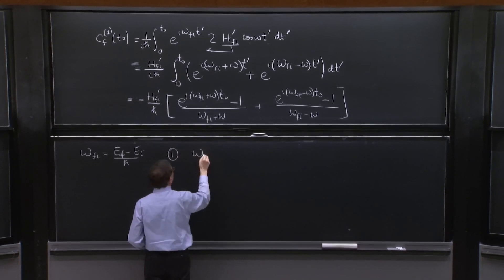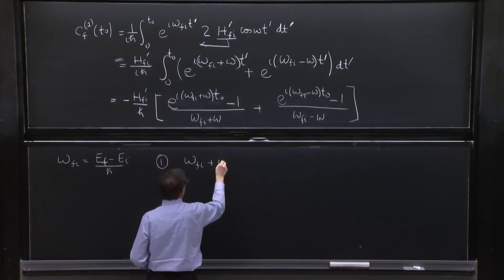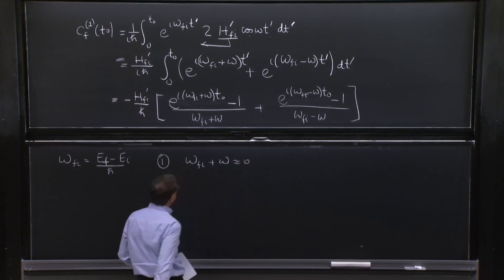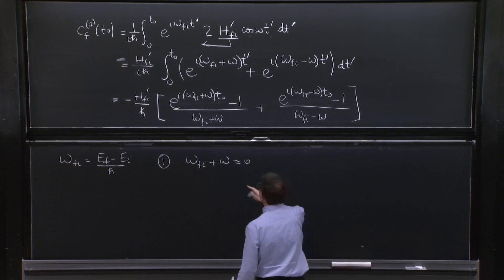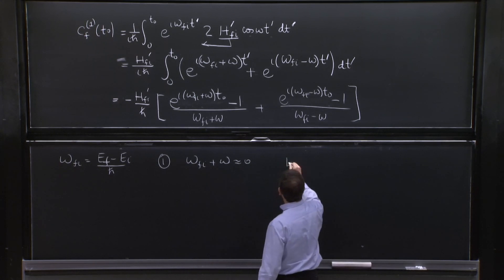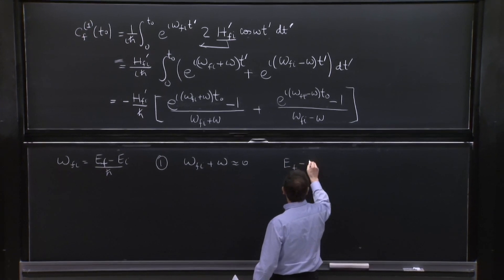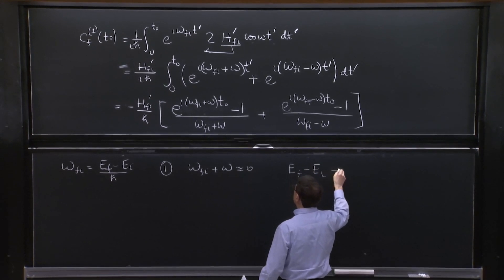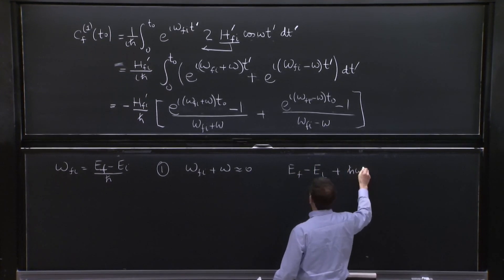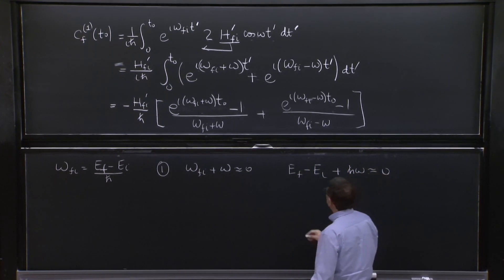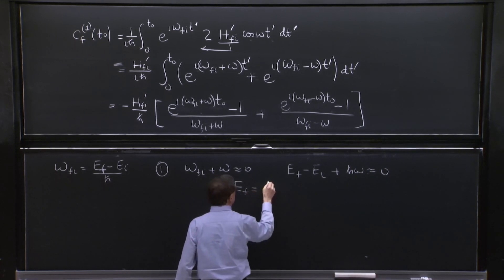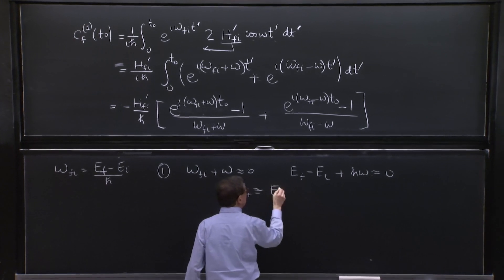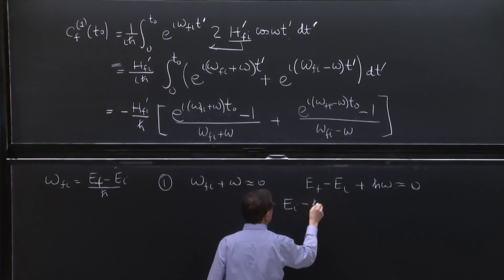When omega fi plus omega is nearly 0. In this case, what's happening? You have EF minus EI plus h bar omega is nearly 0, or EF roughly equal to EI minus h bar omega.